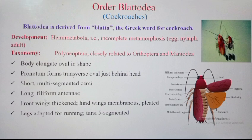The characteristics of the cockroach: the body is elongated and oval in shape. The pronotum forms a transfer oval just behind the head. The pronotum is an insect body part which is directly behind the head. In cockroaches, it is a plate-like structure which covers the thorax of the insect.